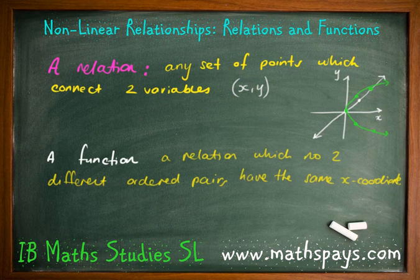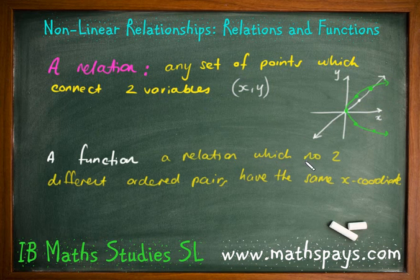So if we look at the definition of a function, a function is a relation where no two different ordered pairs have the same x-coordinate. Both of those graphs are relations; however, only one of them is a function because of that condition.